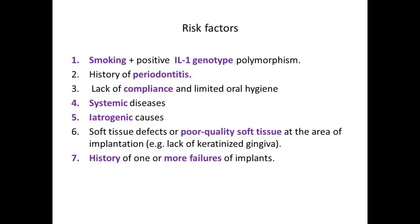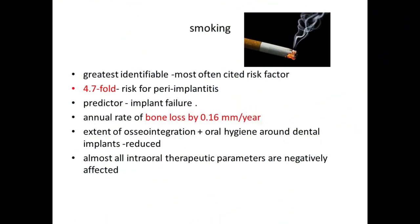Risk factors for peri-implantitis include smoking with a positive interleukin-1 genotype polymorphism, history of periodontitis, non-compliance with oral hygiene, systemic conditions like diabetes, and iatrogenic causes such as improper placement, soft tissue defects, poor soft tissue quality, or history of one or more previous implant failures. Smoking is the most often cited risk factor — there is a 4.7-fold increase in risk of peri-implantitis in smokers.